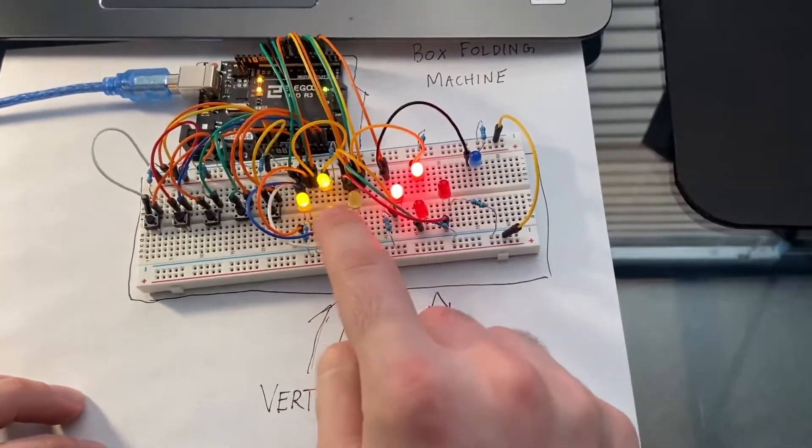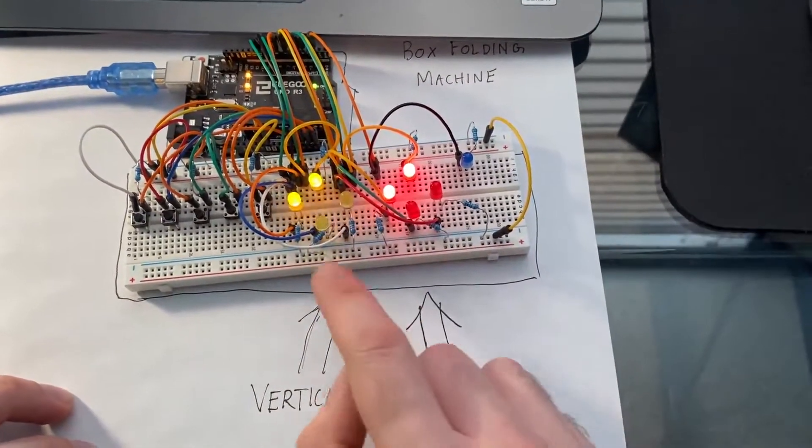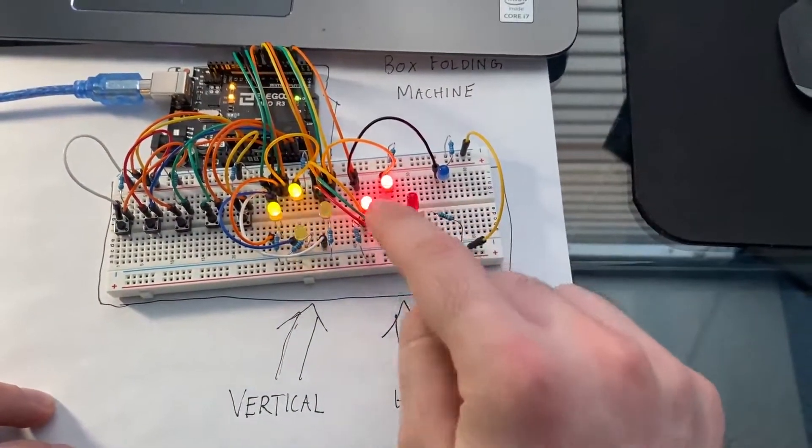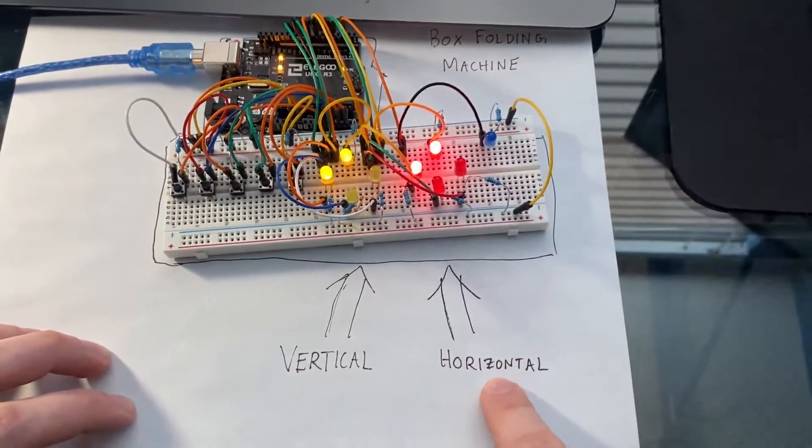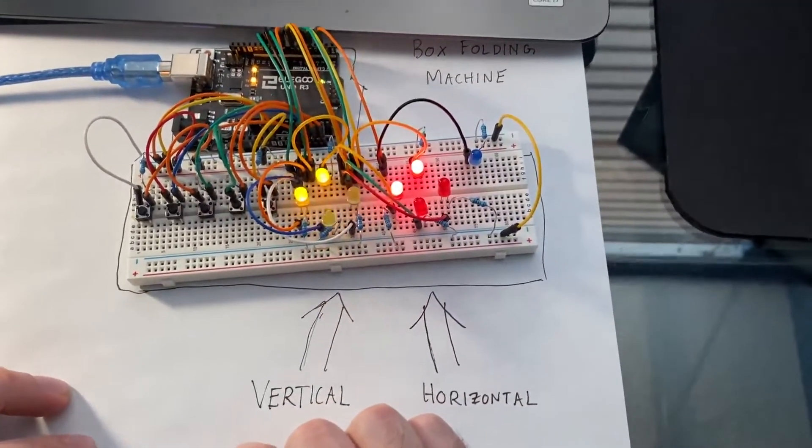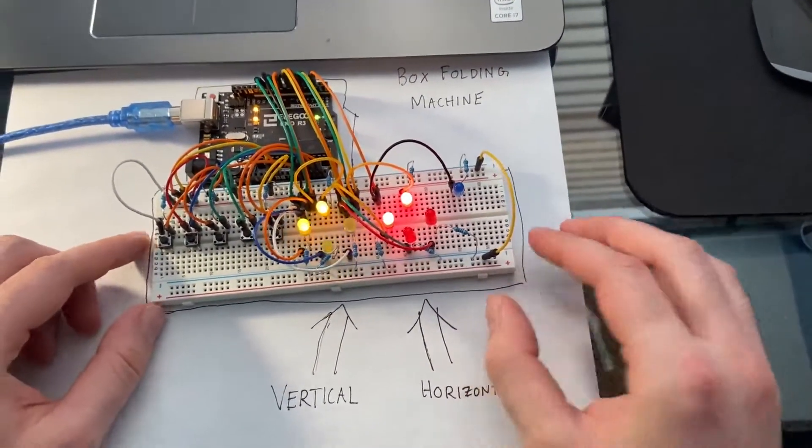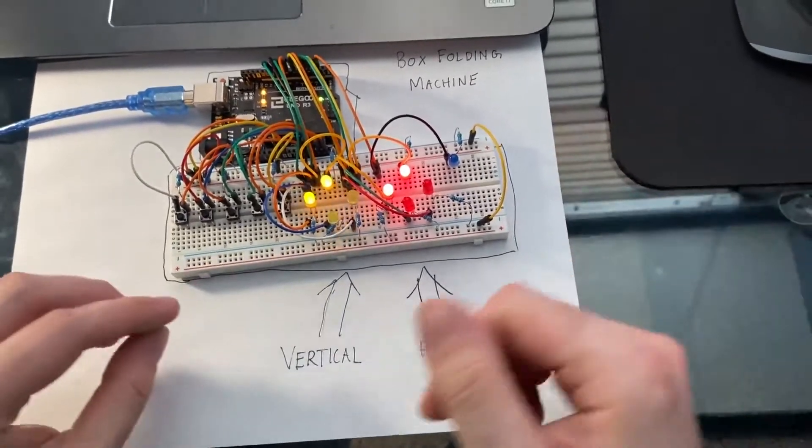And this here represents a stepper motor that is rotating in the vertical direction, and this represents a horizontal stepper motor moving in the horizontal direction on the gantry. So I'll go ahead and demonstrate what the simulated movements look like right now.